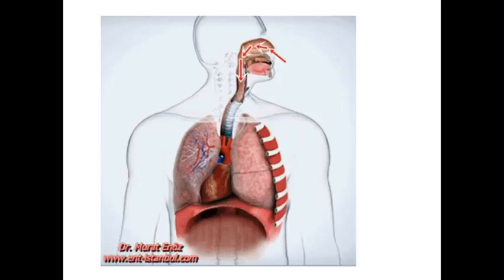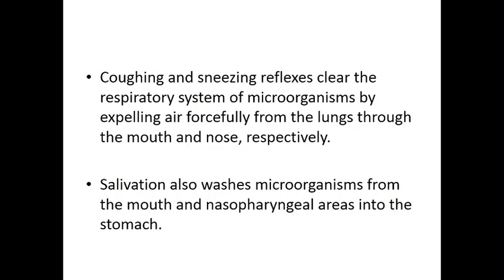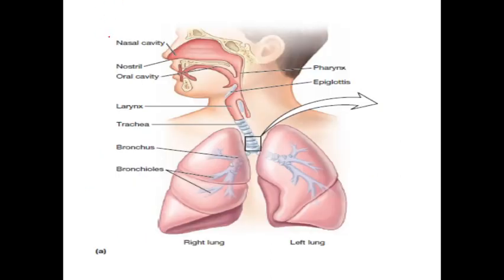In the respiratory tract, air is inhaled and we typically inhale around 10,000 microorganisms per day. Microorganisms larger than 10 micrometers are blocked in the nasal cavity. Those smaller than 10 micrometers may enter the tract but can be eliminated through coughing or sneezing — they go to the pharynx and can be expelled. Coughing and sneezing are defense mechanisms of the body.